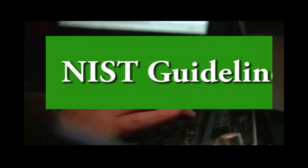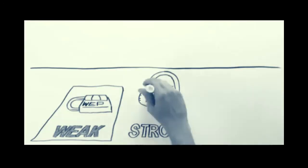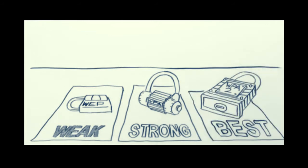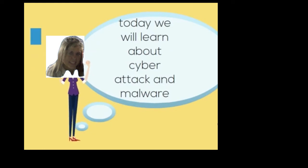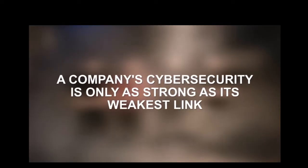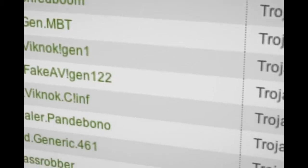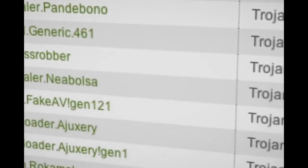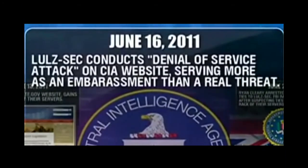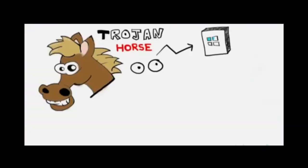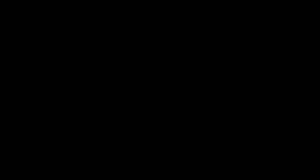Regarding NIST standard guidelines, first I would determine that the security controls I implemented were effective. I would do this by, first, continuously tracking changes to the information system that may affect these security controls, and second, evaluating those security controls using the National Institute of Standards and Technology — known as NIST — based on the high, moderate, and low risks for cyber attacks.